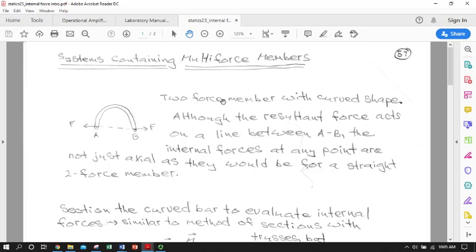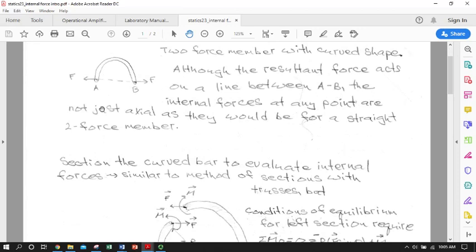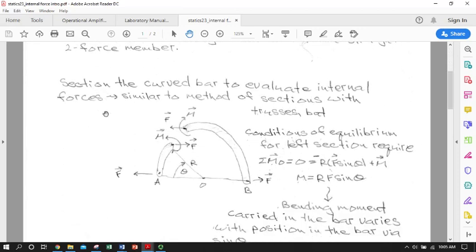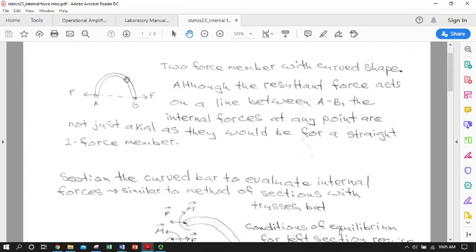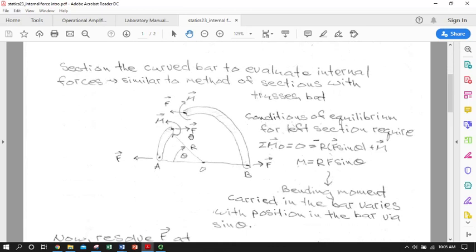...this time that's not going to be the case as we go through the member from one point to the other. So, it's definitely a two-force member. We have a curved shape. Resultant force acts on a line between A and B, just like any two-force member. But the internal forces, first of all, they're going to change in magnitude with every point and they're not just going to be axial. So the forces won't just be tangent to the curve at every point. Some will be perpendicular and we will also have bending moments. So, how do we find them? And more importantly, how do we find them at any point?